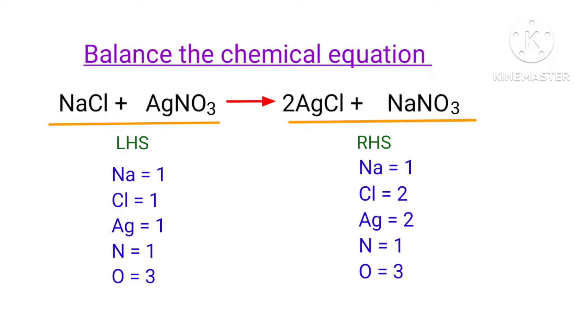In this equation, the left hand side, there are 1 sodium atom, 1 chlorine atom, 1 silver atom, 1 nitrogen atom, and 3 oxygen atoms present. And the right hand side, there are 1 sodium atom, 2 chlorine atoms, 2 silver atoms, 1 nitrogen atom, and 3 oxygen atoms present.